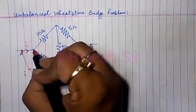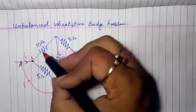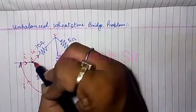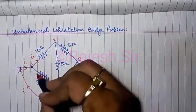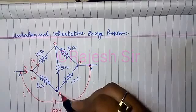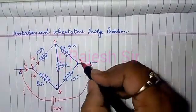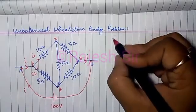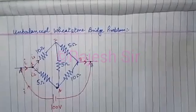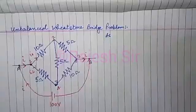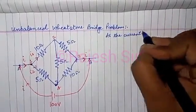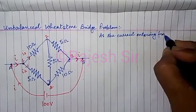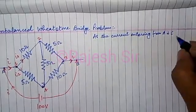Let's say the current I flows through point A. At node 1, the current I gets divided into two parts: current i1 flows in branch 1-2, and current i2 flows in branch 1-4. From end B, the current I must leave — the entering current and the leaving current must be the same.